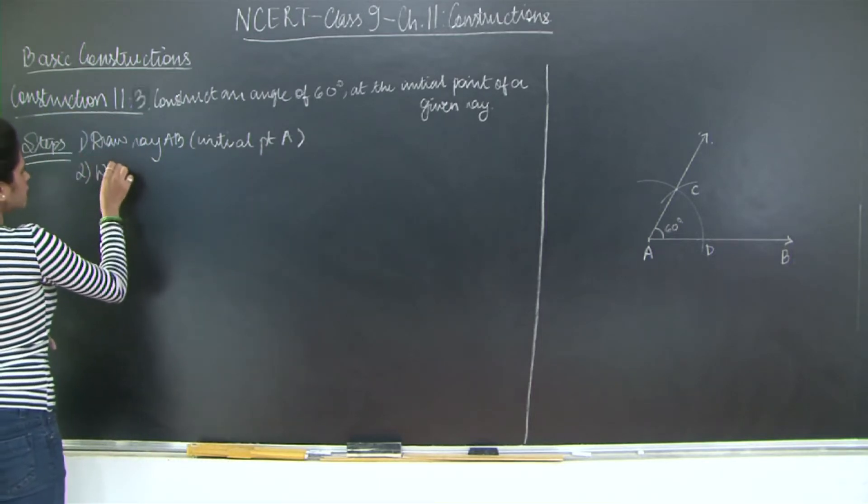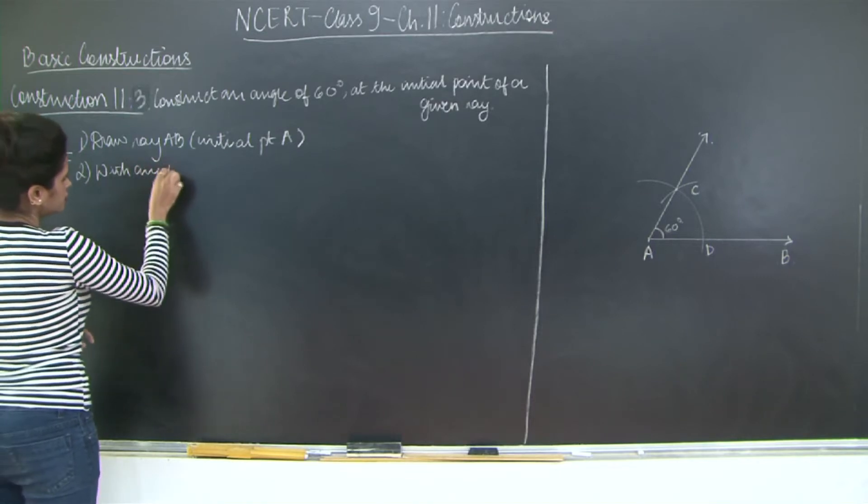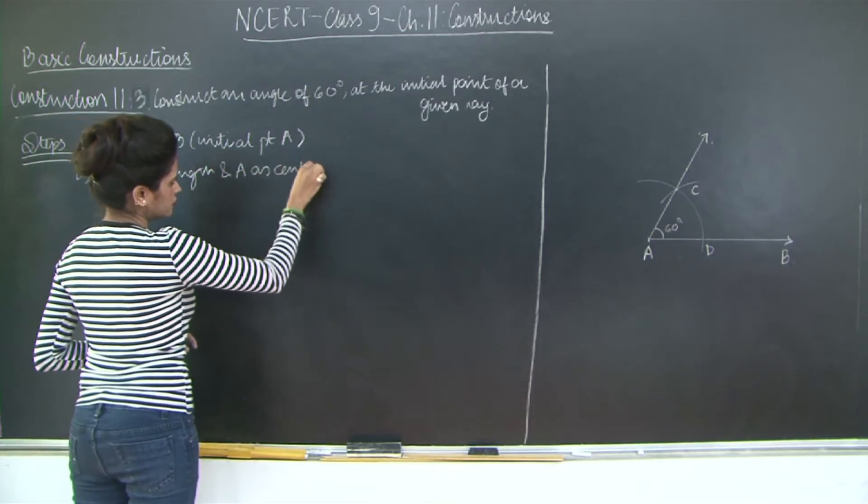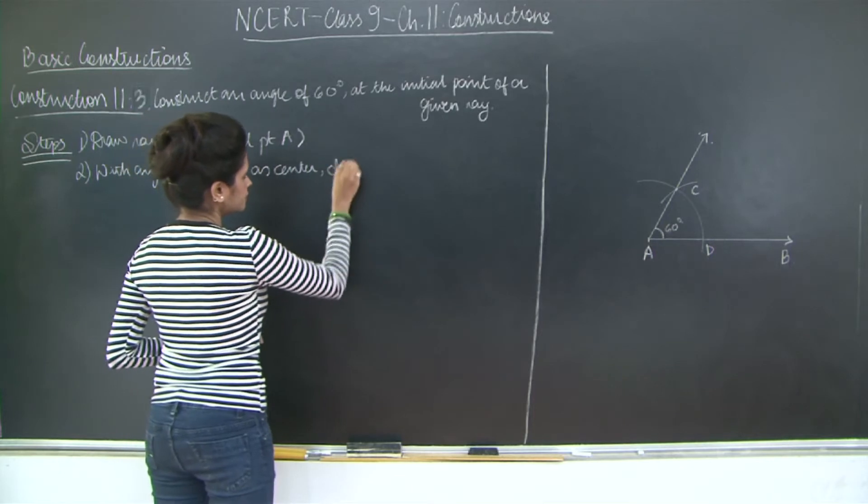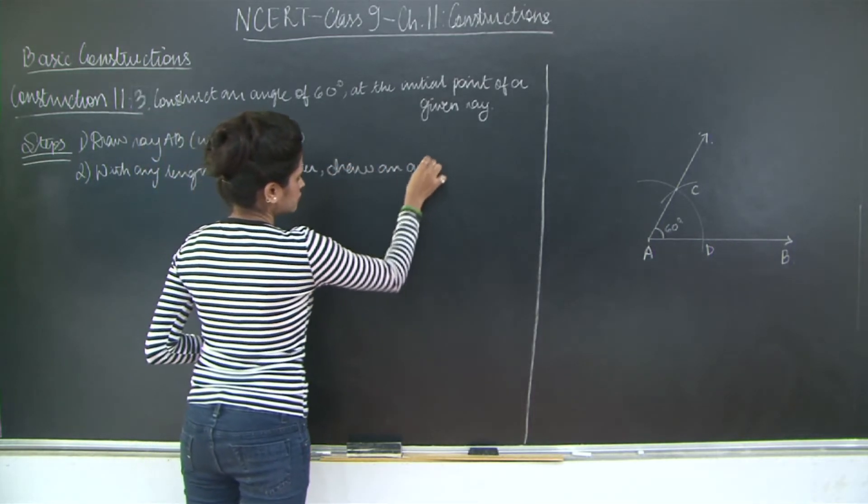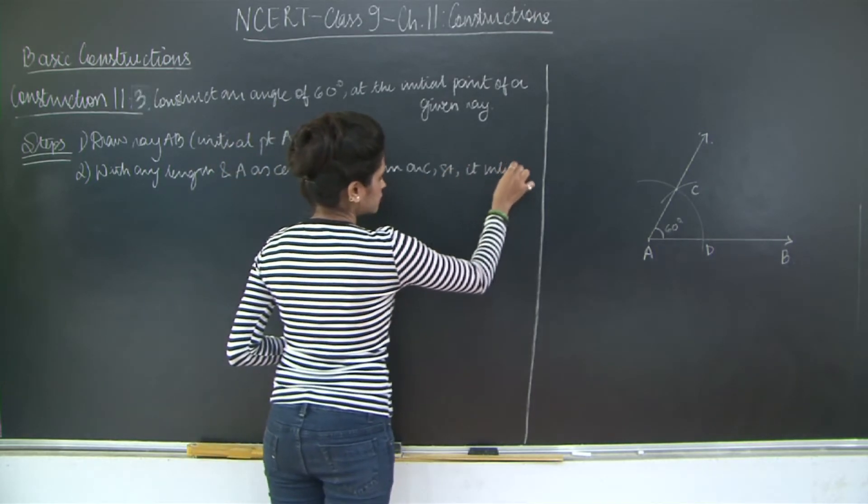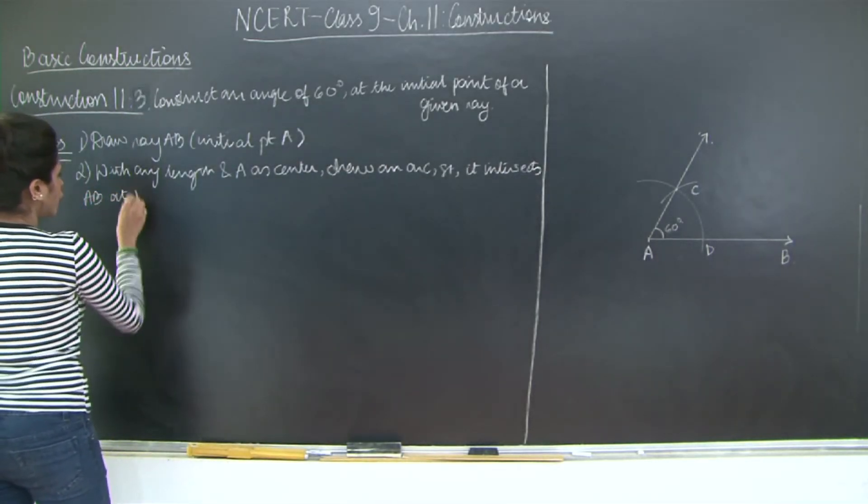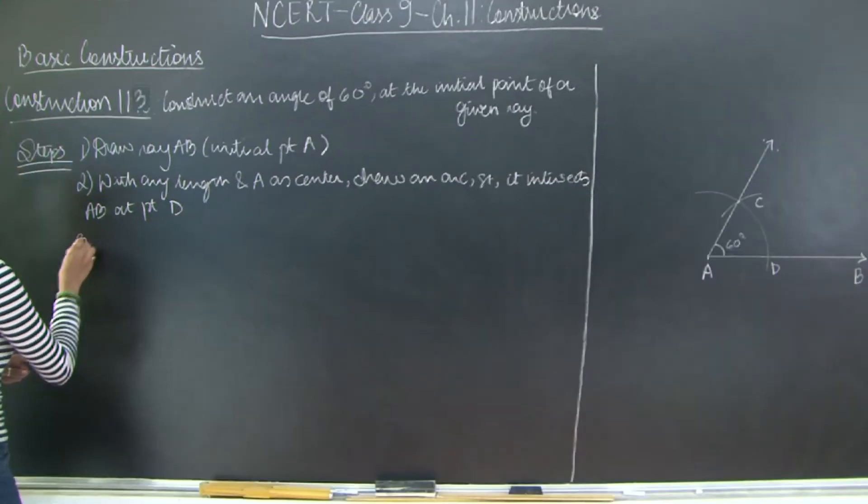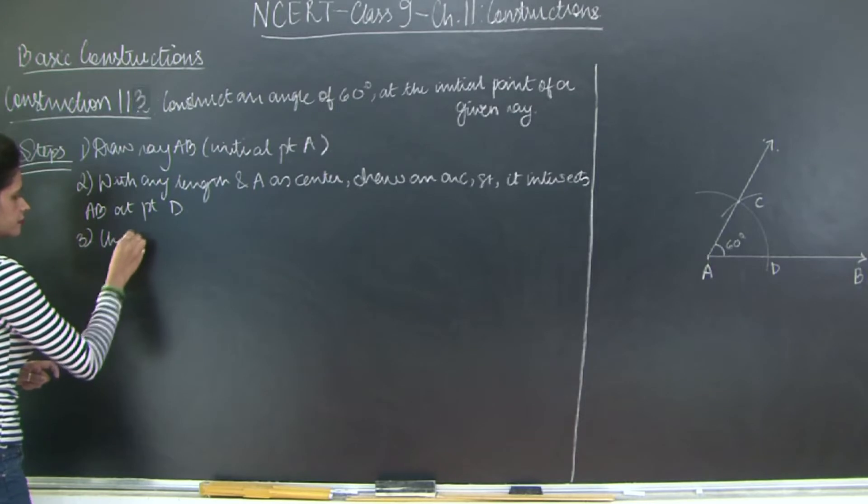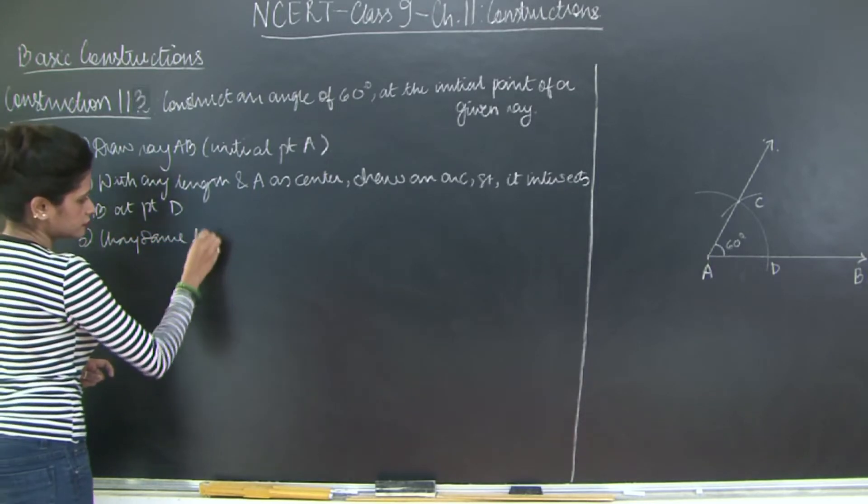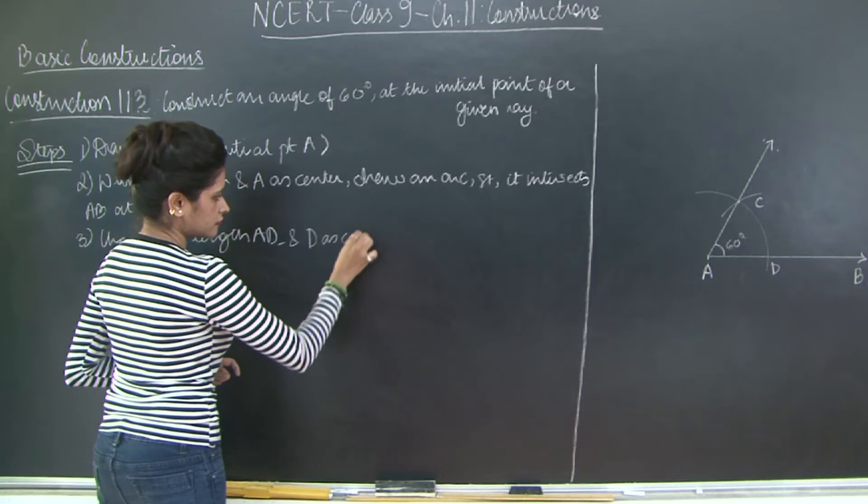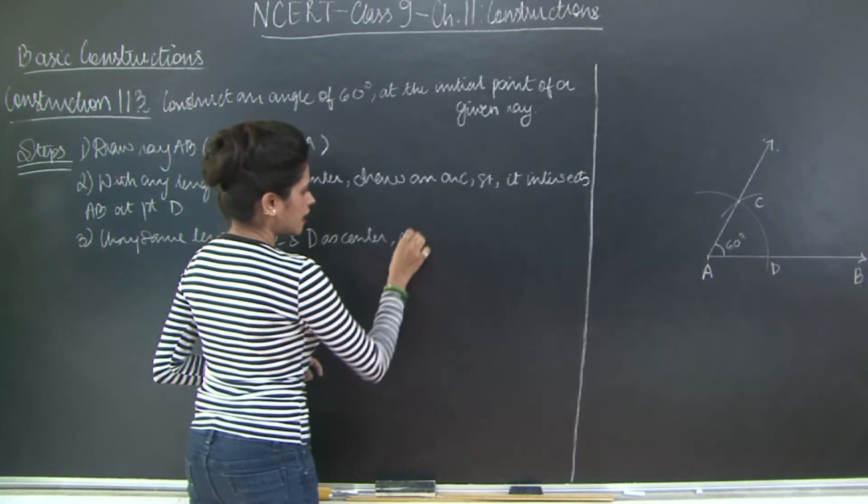Okay, so I'll say draw ray AB, initial point A. Then with any length and A as center, draw an arc such that it intersects AB at point D.